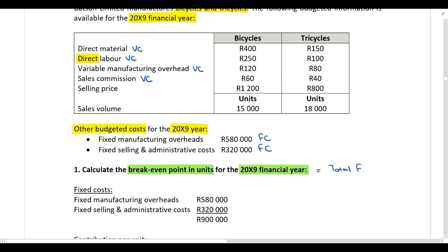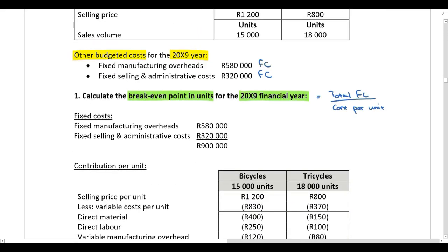To calculate the break-even point in units, we take total fixed costs and divide by the contribution per unit. First we need to calculate total fixed costs — a very straightforward calculation. You just bring down the fixed costs from the question: fixed manufacturing overheads of 580,000 rand and fixed selling and admin costs of 320,000 rand.